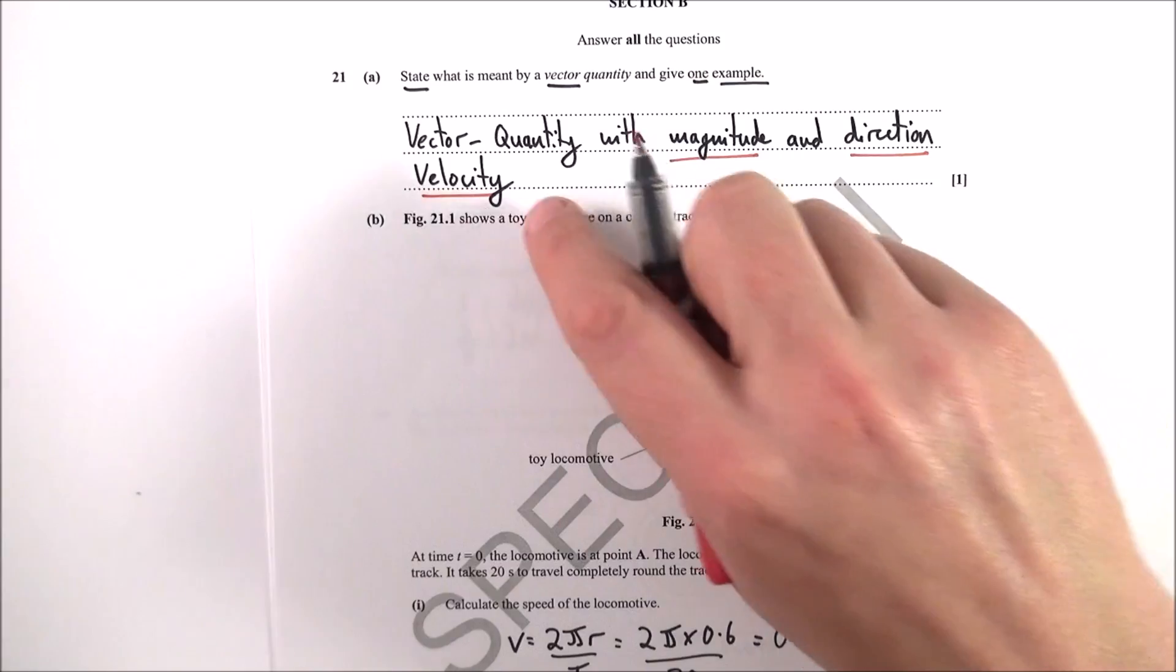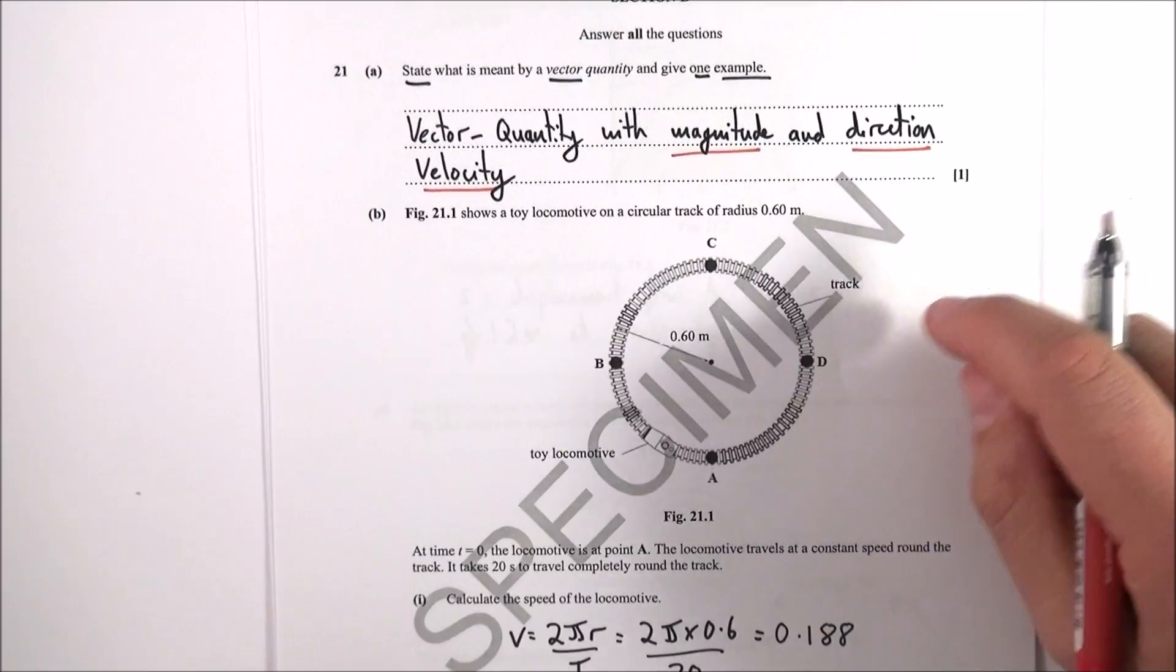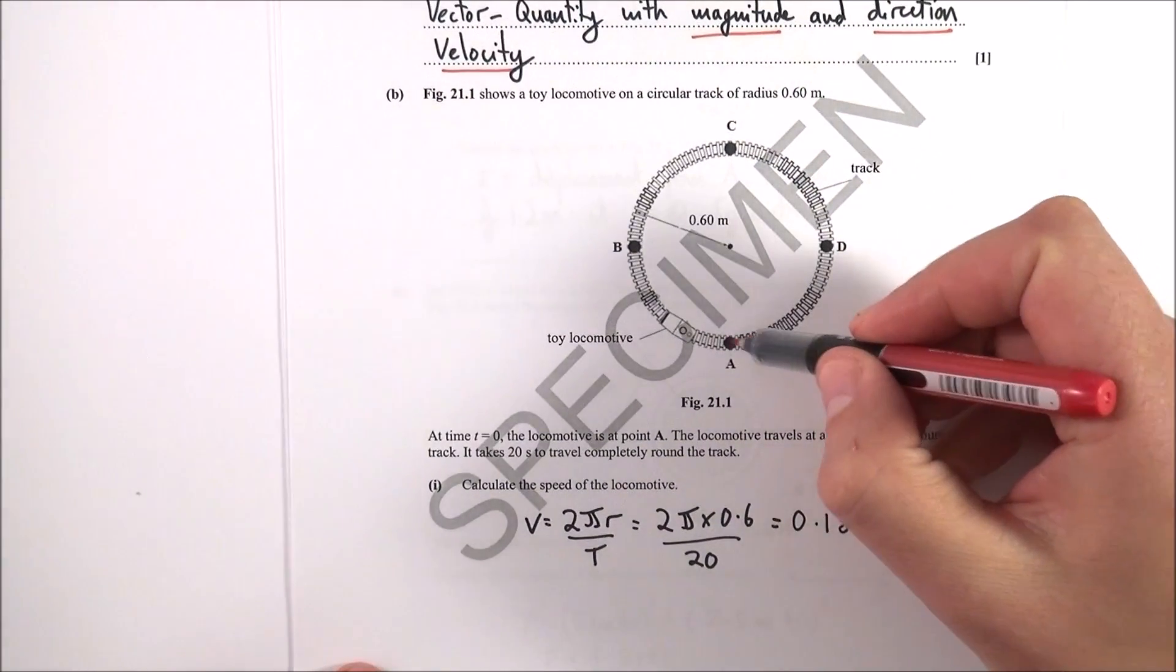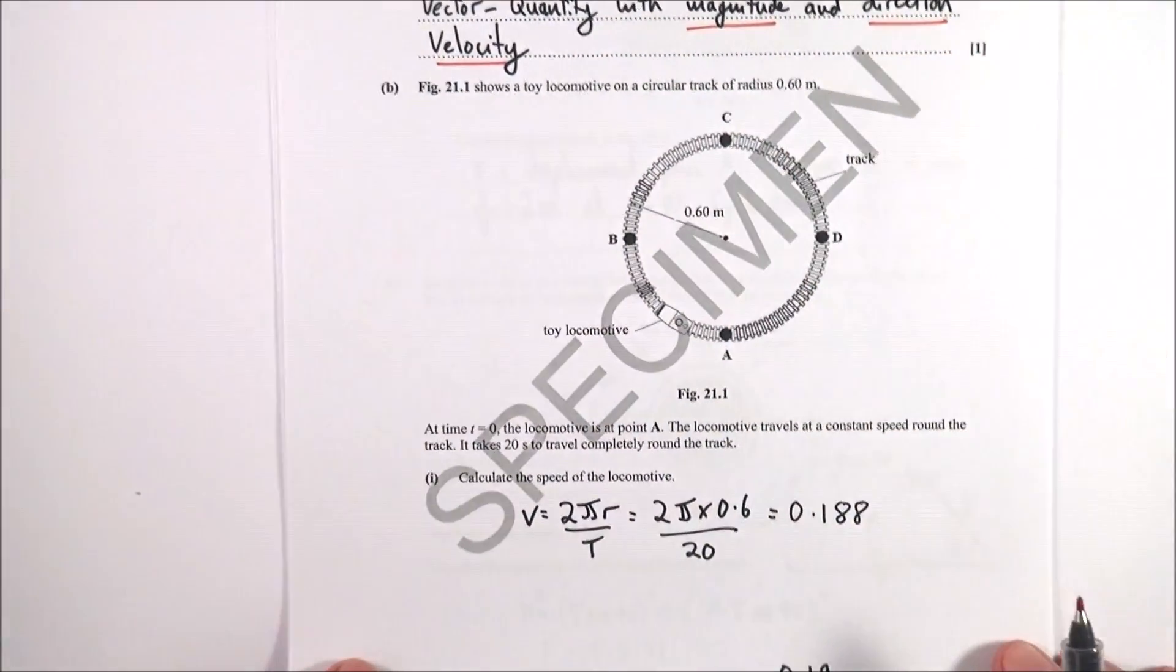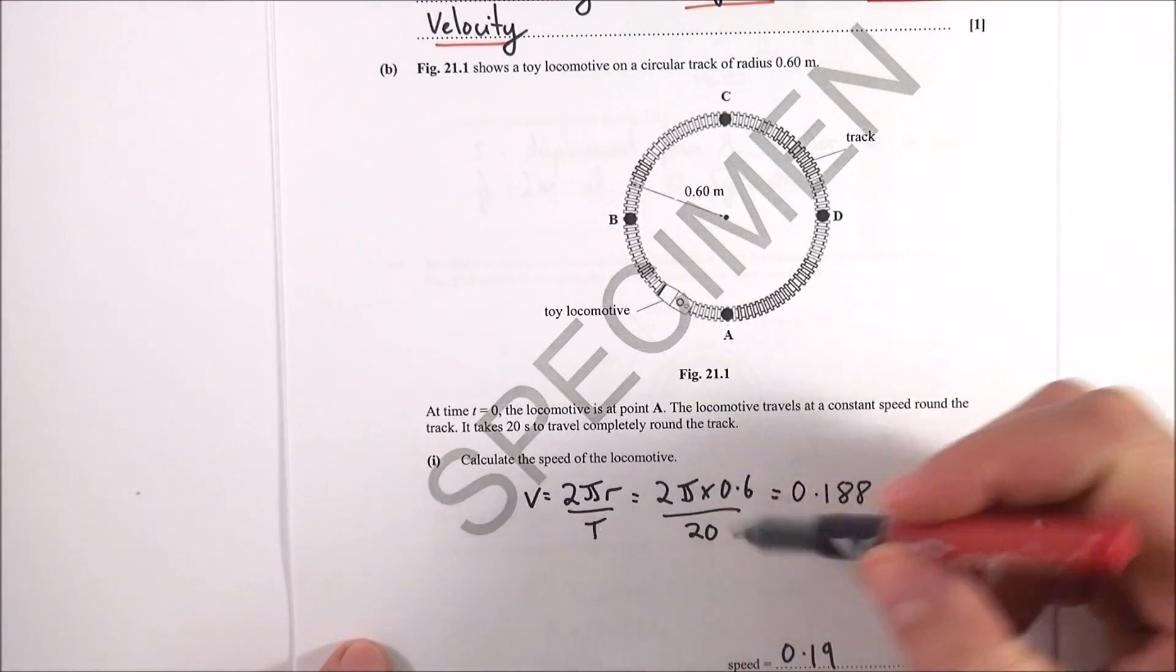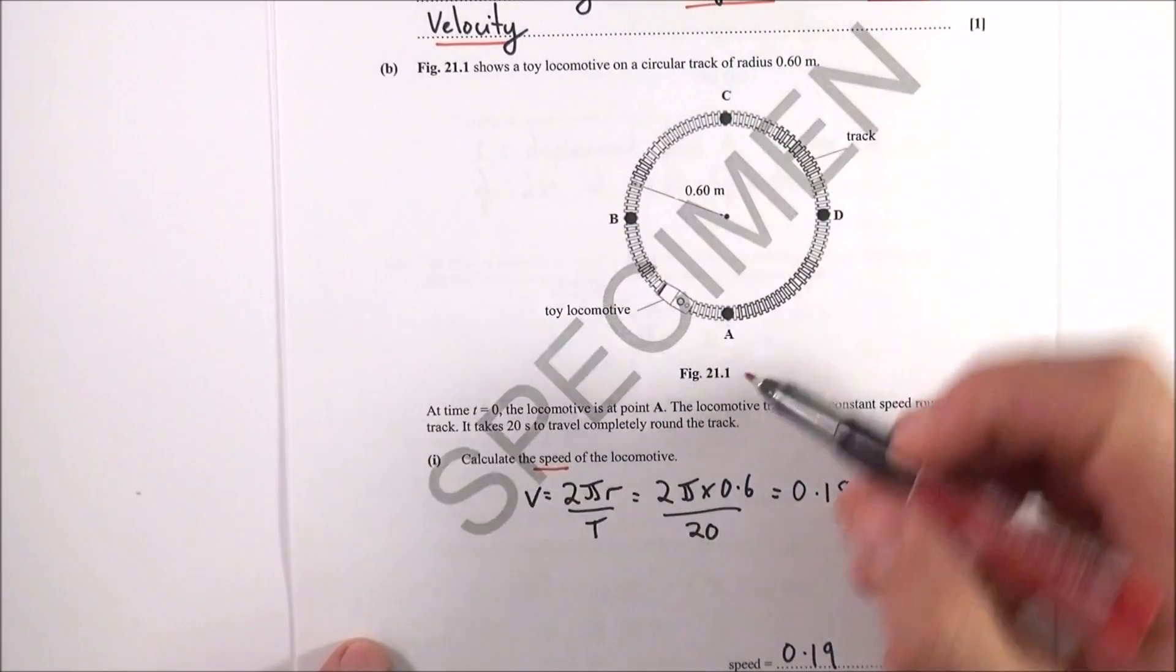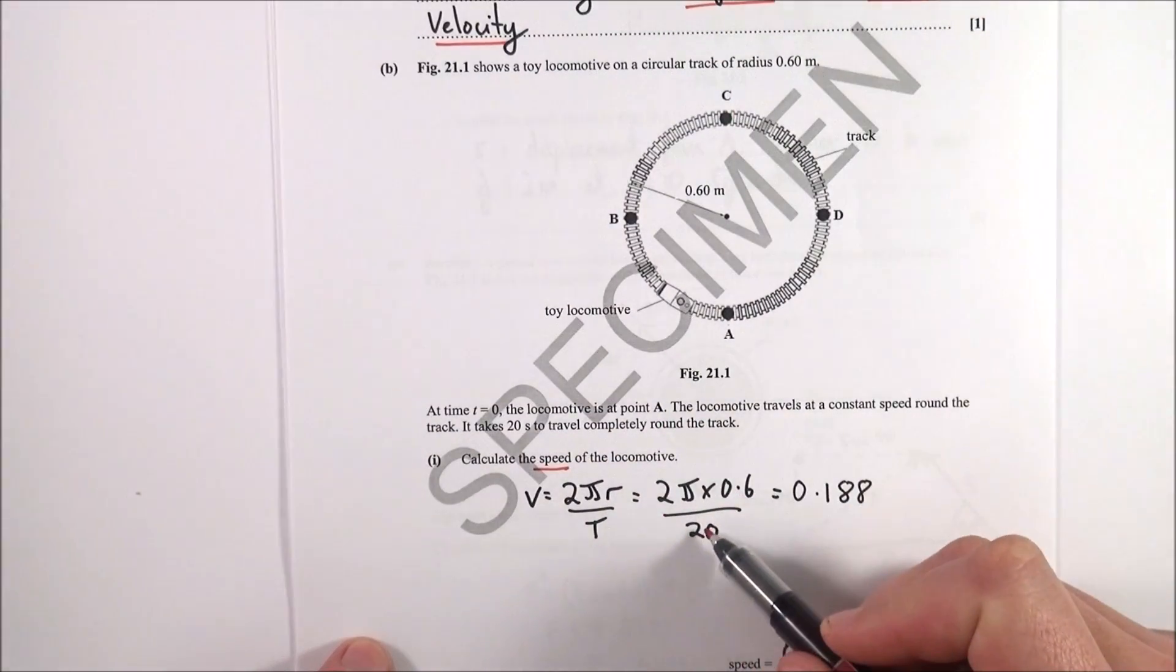The next one, we have something moving around this circular track, so calculate the speed. Well the speed is equal to distance over time, and because we're looking at the speed here, the distance it goes in that time is equal to 2πr divided by the time for one rotation which is 20.